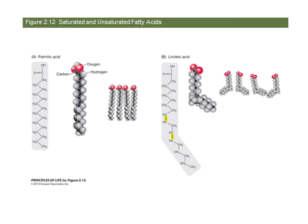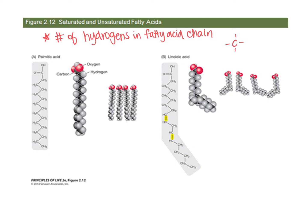First, let's talk about saturated versus unsaturated fats. The terms saturated and unsaturated refer to the number of hydrogens present in the carbon-hydrogen chain. This is influenced by the valence electrons of carbon. Remember that valence electrons are the electrons available for pairing, and carbon can form four bonds. However, carbon is unique in that it can form double or even triple bonds, and that's going to affect the saturation of the fat.